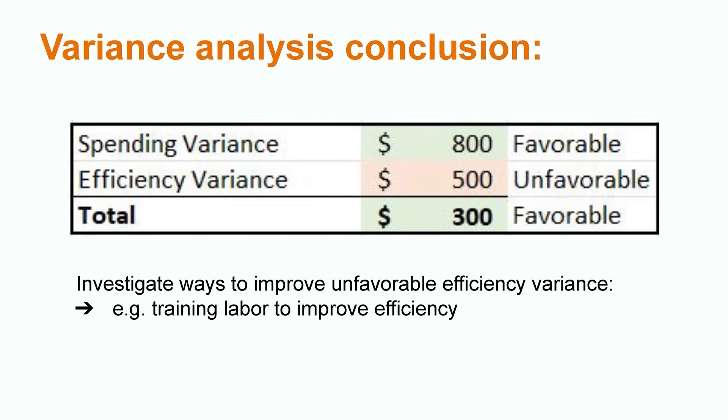As we can see, when we sum up the two variances, this brings us back to our original total variance of $300 favorable. Here we can see that even though the company had a favorable outcome, they could do even better in the future by spending more time investigating ways to improve their unfavorable efficiency variance, such as training their labor force to complete tasks in a more time-efficient manner.